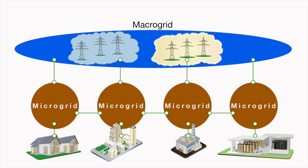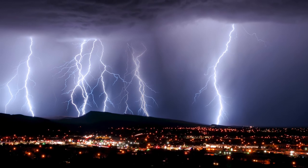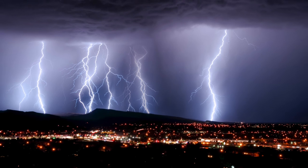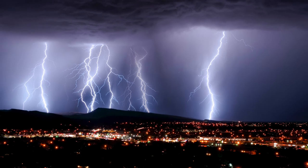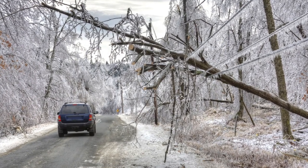Smart cities can take advantage of a community of microgrids by monitoring the system load with switching controls sharing the connected load to the nested microgrids and any connection to the macrogrid. As weather and other security-related issues affect the macrogrid increasingly, power-critical facilities are adopting microgrids to meet their power needs.